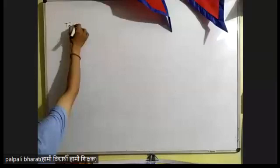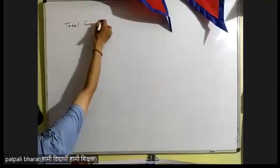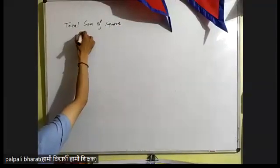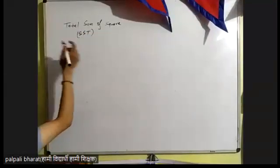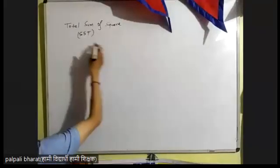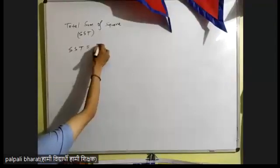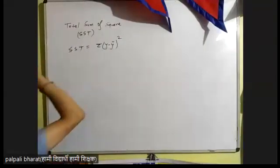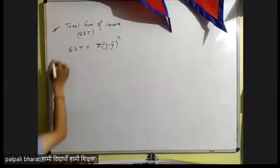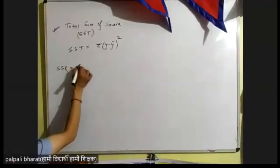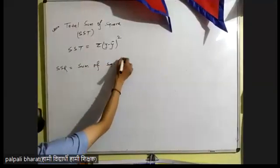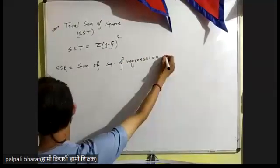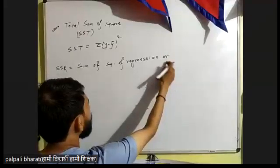Next, total sum of squares. Total sum of squares is the summation of Y minus Y-cap. There are two important formulas. The sum of square of regression is the summation of Y-cap minus Y-bar.